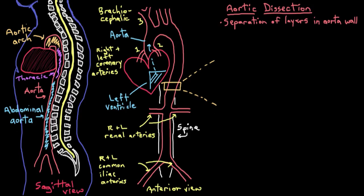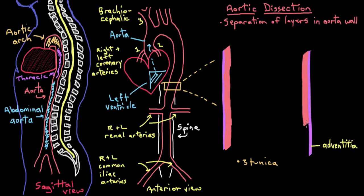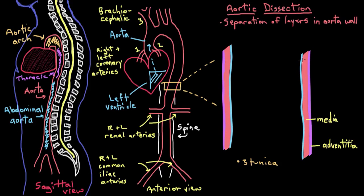The walls of the aorta have three main layers, and we call each of these layers a tunic — or in Latin, tunica. The outermost layer is called the tunica adventitia. Then there's a really thick middle layer called the tunica media, or just the media. The media is a really thick muscular layer of the aorta that's necessary to allow the aorta to withstand all the pressure of the blood — the blood pressure it has to deal with. Finally, on the very inside, facing the inside of the aorta, is the innermost layer called the tunica intima, which is a really thin layer that lines the inside.